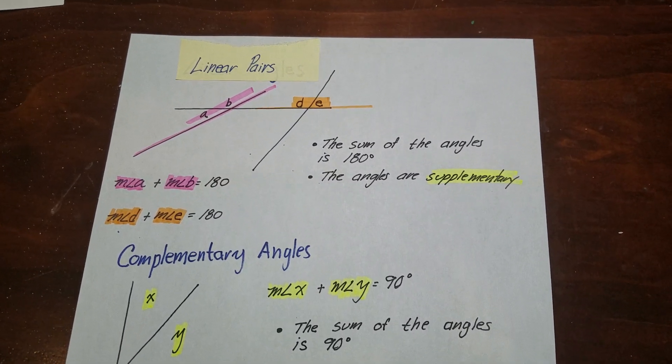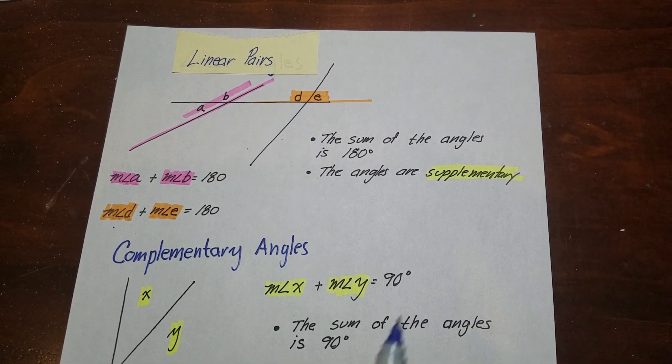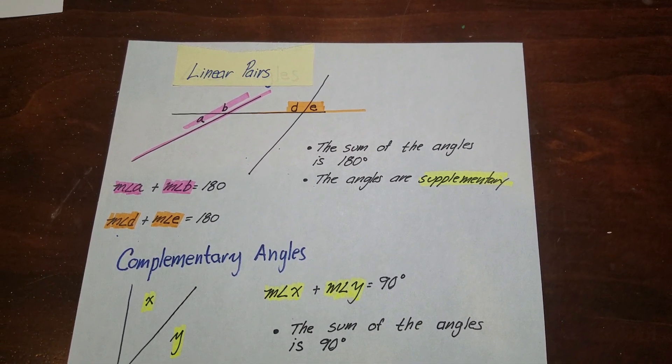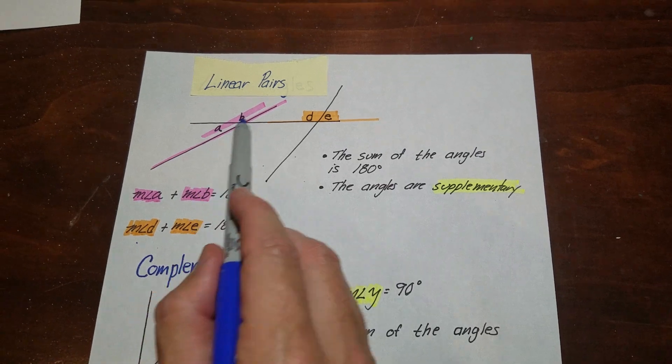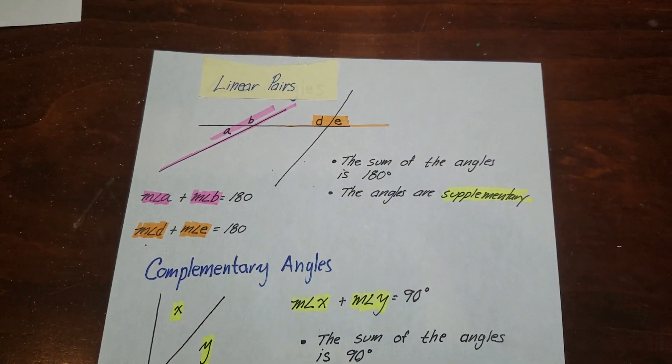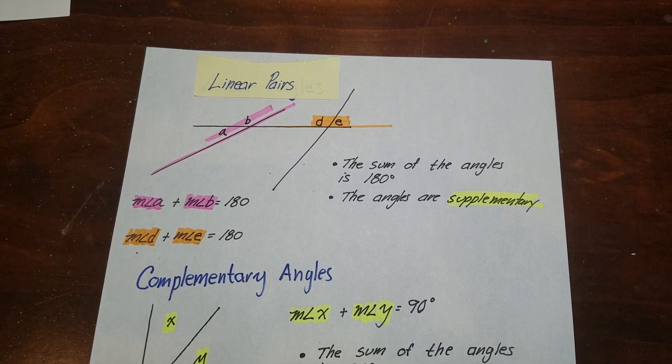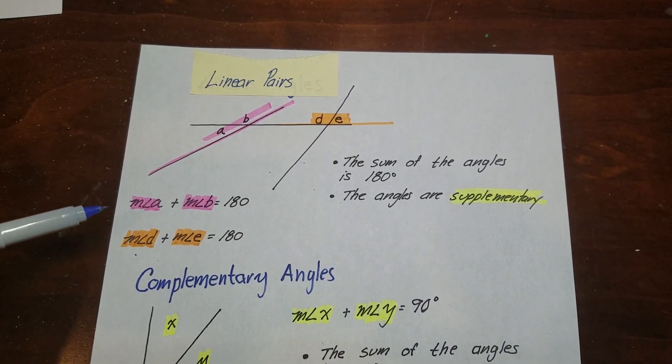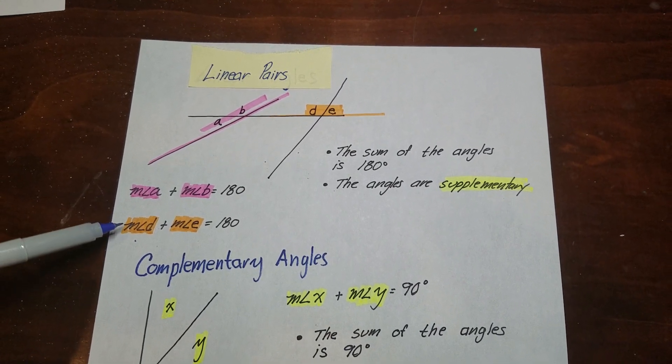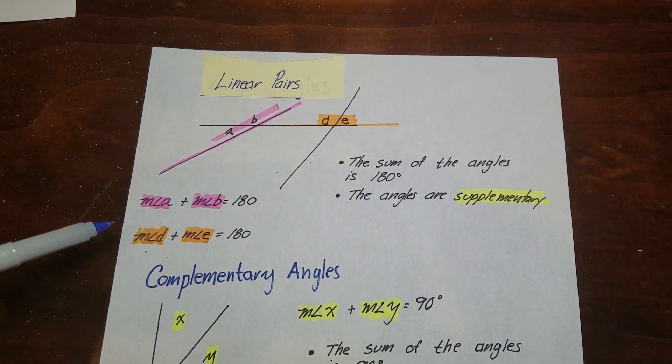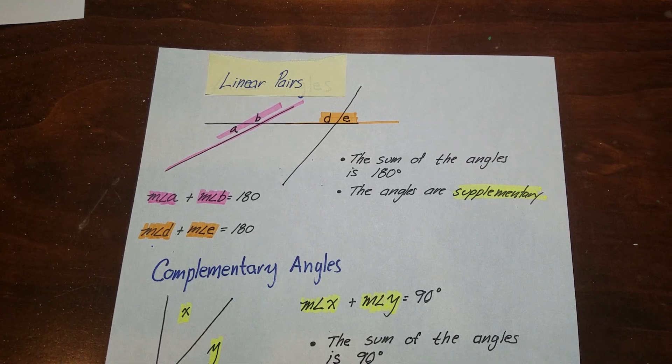But what a linear pair is, is they're supplementary. So I have that highlighted here. And that means that the two angles add to 180 because if you look at them, they're on the same line together. So the angle measure of a straight line is 180 degrees. If you get two angles, you can set up equations like I have shown here so that they equal 180 degrees. That's algebraically the way to show that the sum of the two angles is 180 degrees.